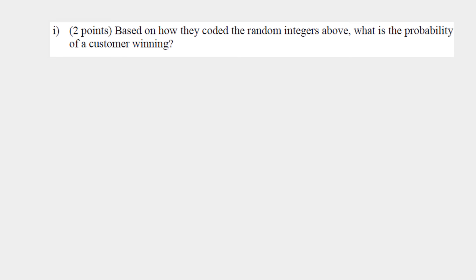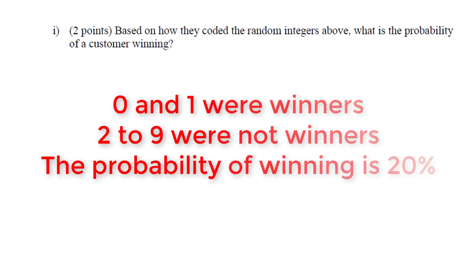Using the rules of this giveaway, based on how the numbers were coded, what is the probability of a customer winning? Well, 0 through 1 represents someone winning, and 2 through 9 represents someone not winning. So the probability of someone winning is 2 out of the 10 numbers, which is 20%.